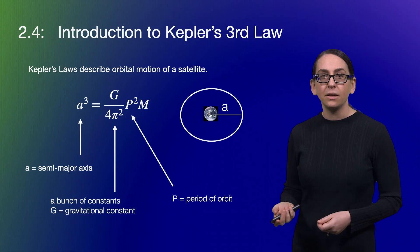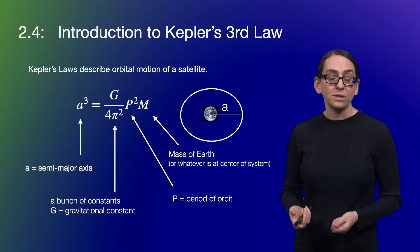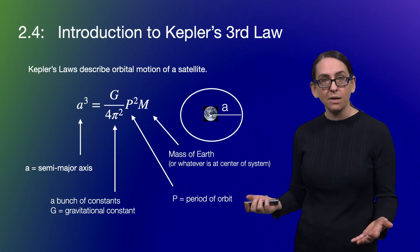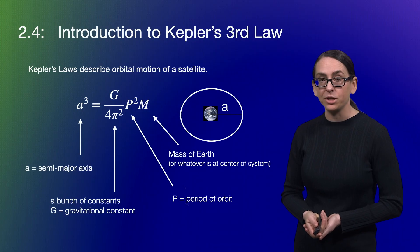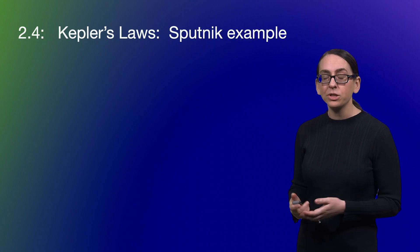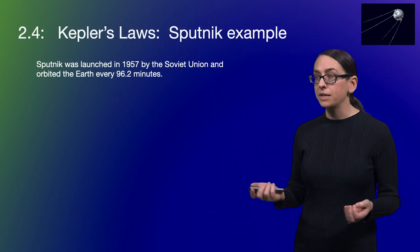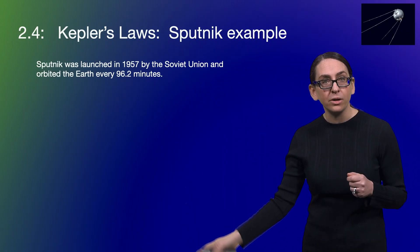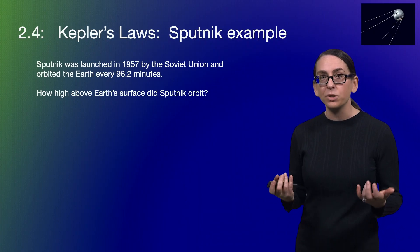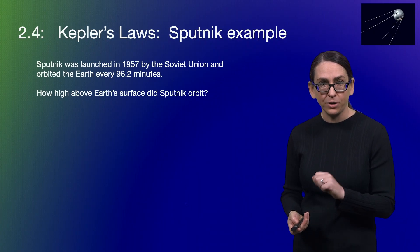So those are the constants. Then we have the period of the orbit — that's how long it takes the object to go around — and then the mass of the Earth, which we just talked about, looked up in the same units as our gravitational constant. So let's do an example. The first example we talked about in segment 2.4 was Sputnik, which was launched in 1957 and orbited the Earth every 96.2 minutes. The question I asked in that segment was: how high above the Earth's surface did Sputnik orbit?